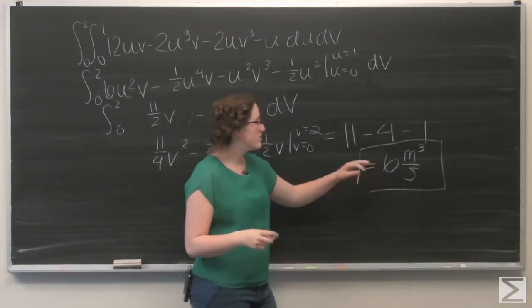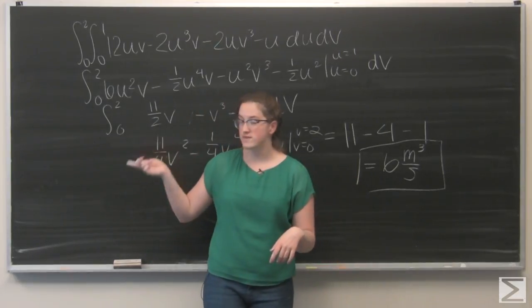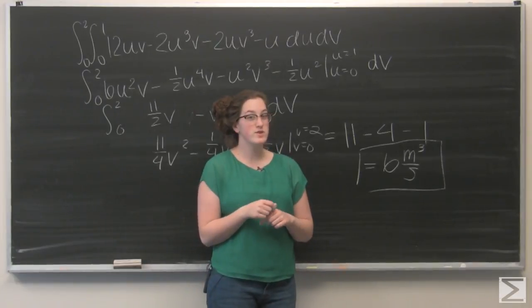And via the directions in the problem, I'm going to say that's in meters cubed per second. So, fluid is flowing through our surface M at a rate of 6 meters cubed per second.